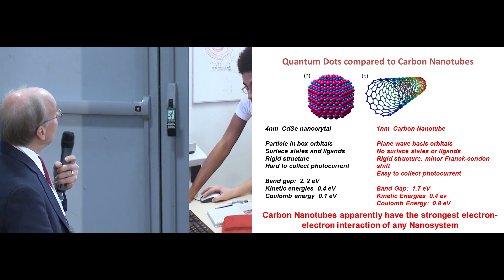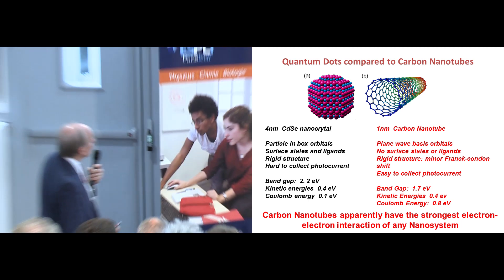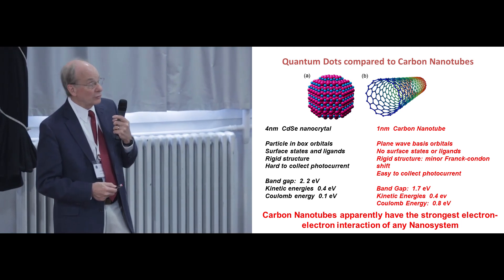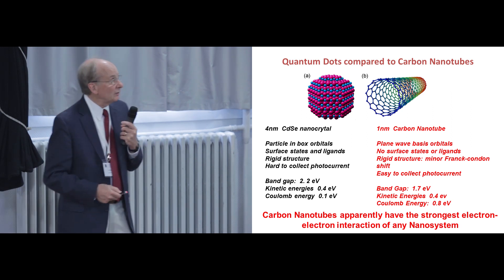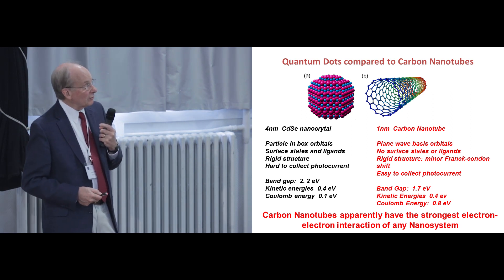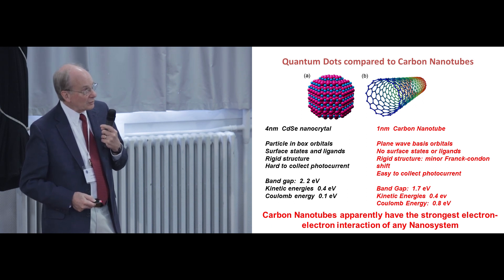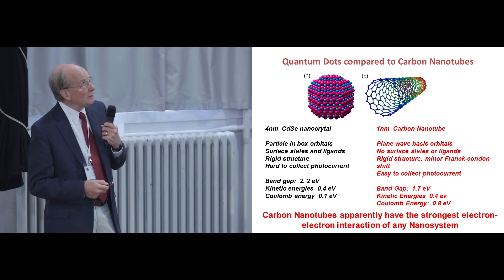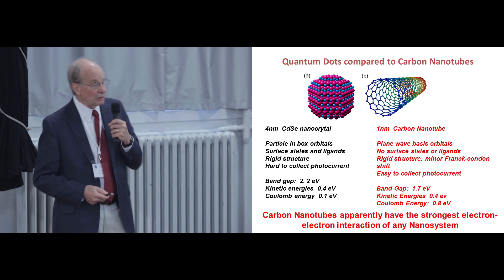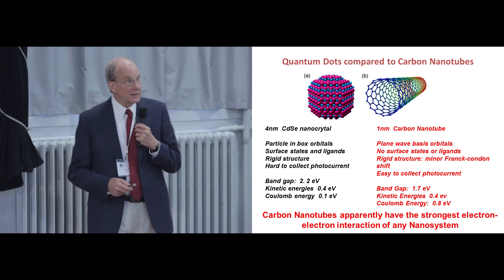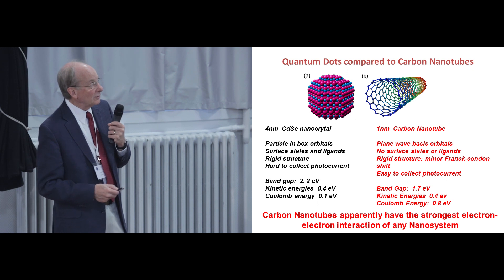Here's a direct comparison of the cadmium selenide and the carbon nanotube. Here the Coulomb interaction is taken into account first-order perturbation theory. The kinetic energies are actually larger than the Coulomb interaction. Here it's the reverse. Coulomb interaction is larger. Kinetic energies are smaller. The other great difference between these systems is this is sp2 and this is sp3. No surface states. That makes a huge difference in practical application. And these systems have surface states.